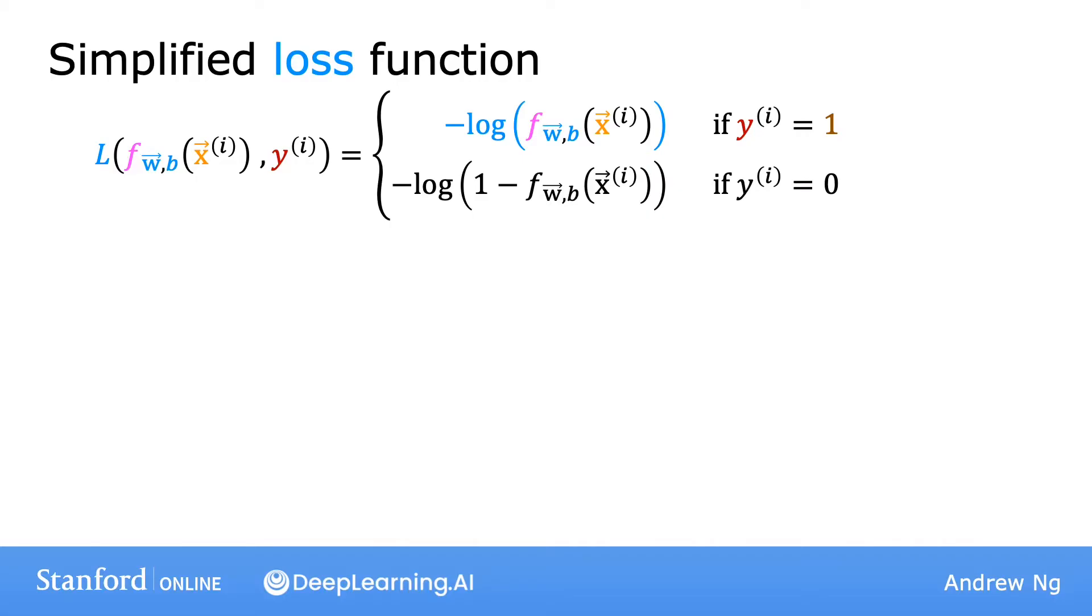As a reminder, here's the loss function that we had defined in the previous video for logistic regression. Now, because we're still working on a binary classification problem, y is either 0 or 1. Because y is either 0 or 1 and cannot take on any value other than 0 or 1, we'll be able to come up with a simpler way to write this loss function.